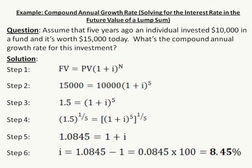If you do that calculation, you should end up with 1.0845 for the left side of Step 5. So Step 5 reads: 1.0845 equals 1 plus I. Now in Step 6, solve for I. I equals 1.0845 minus 1, equals 0.0845, times 100 to get it into percentage notation, equals 8.45%. So the compound annual growth rate for this investment is 8.45%. This is a hypothetical example.